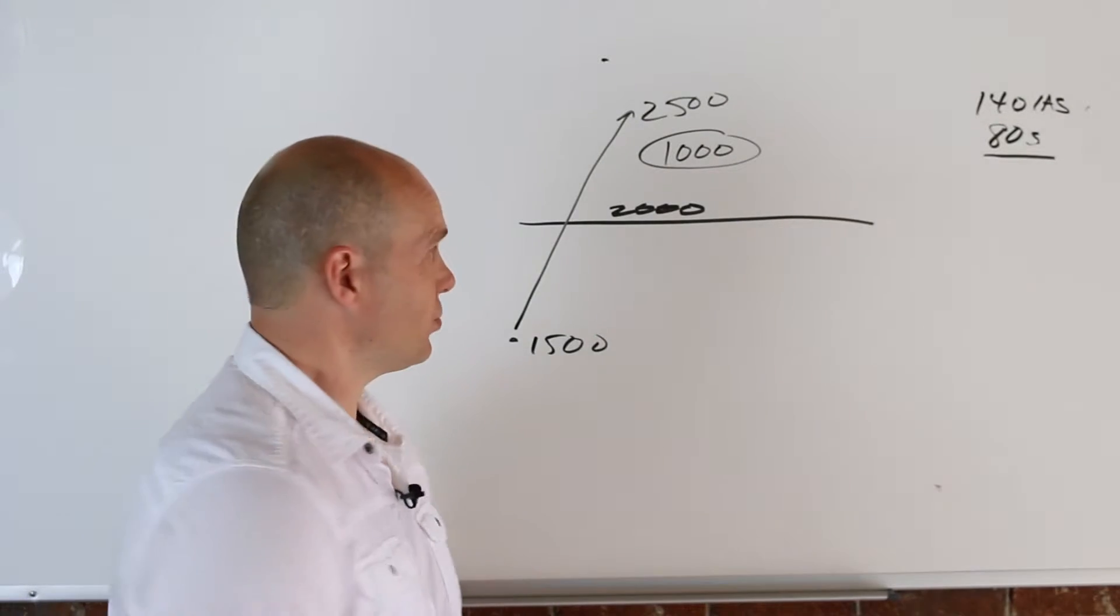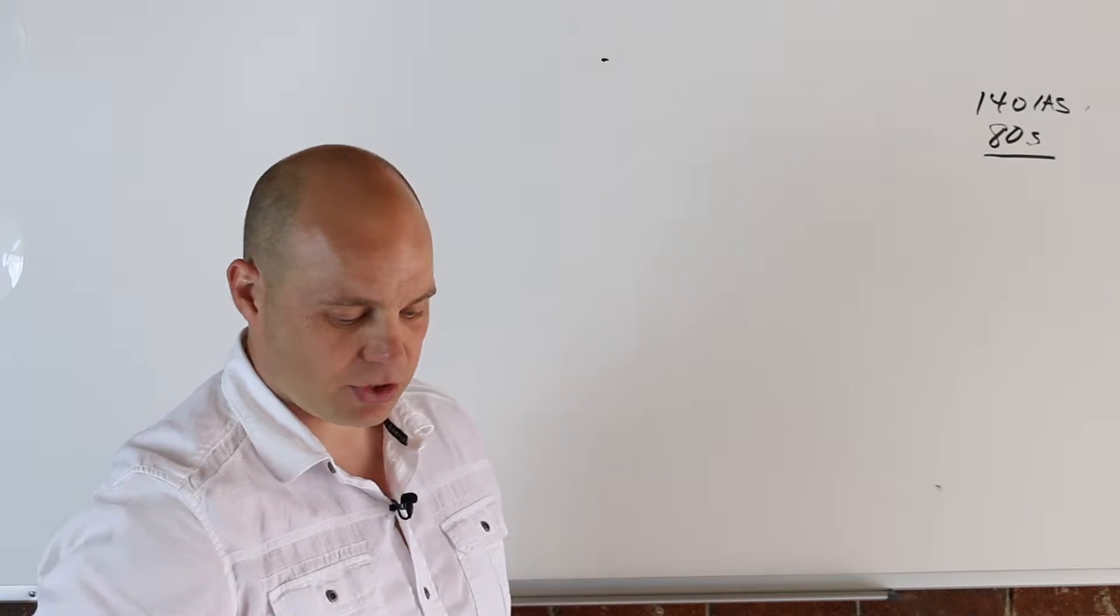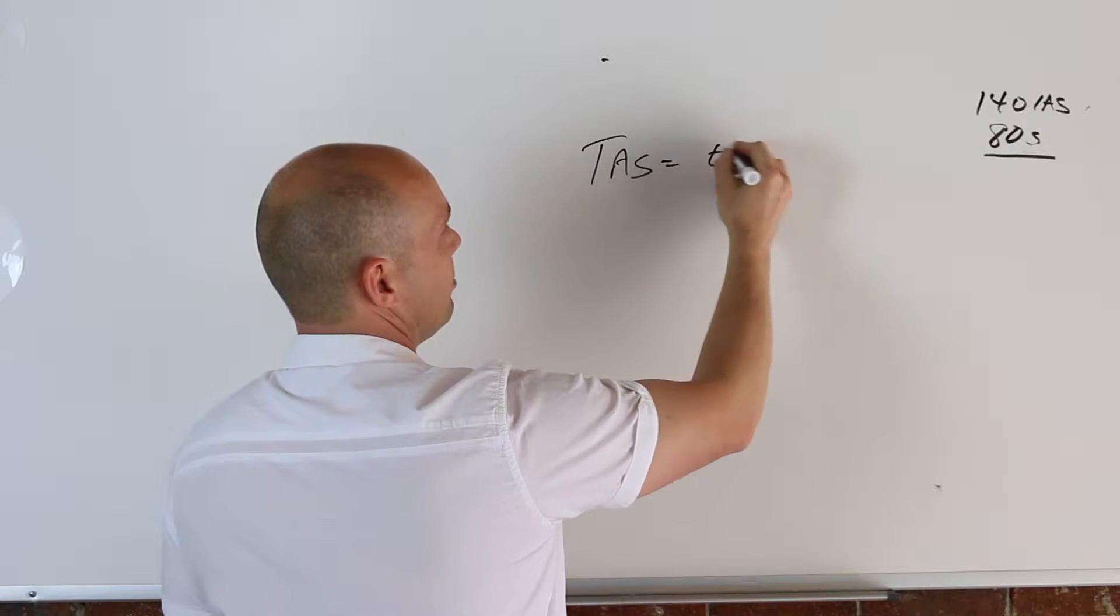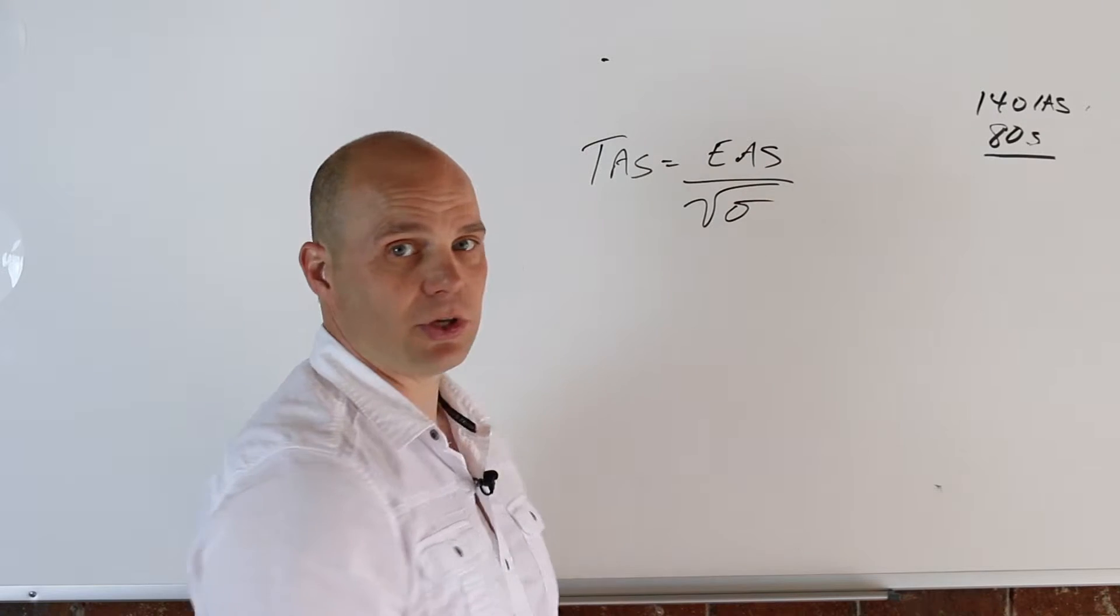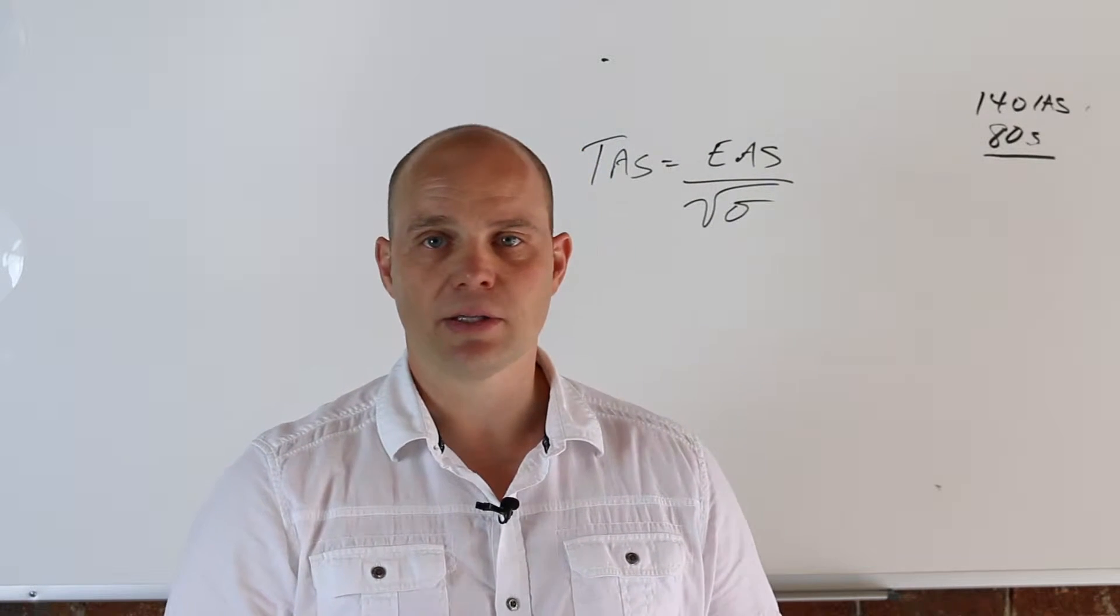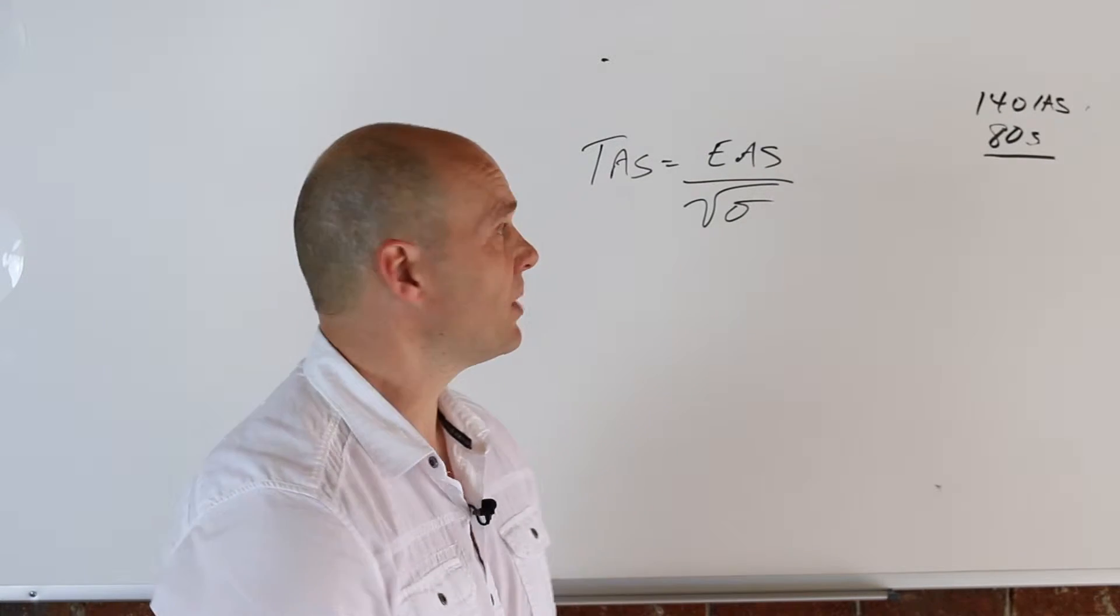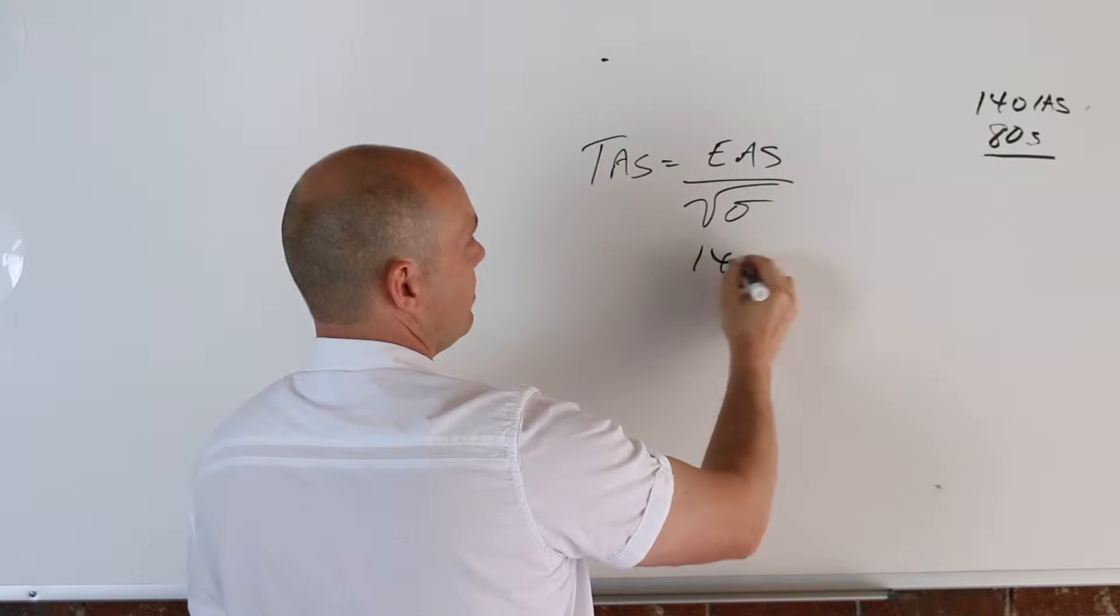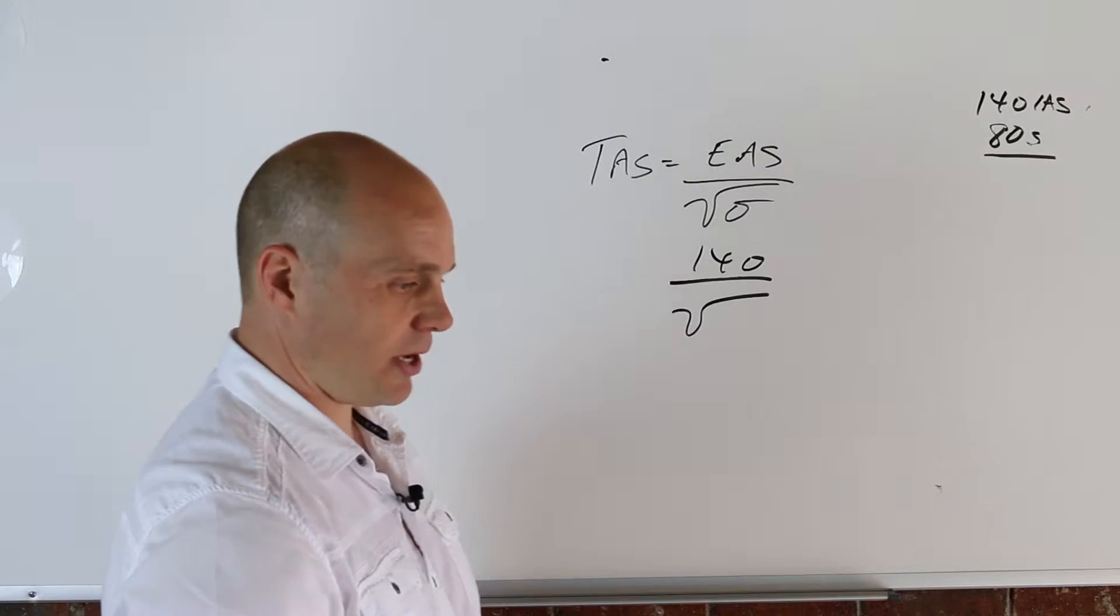So we need to first start off with finding your true airspeed. So this is going back to Chapter 3. To find your true airspeed, true airspeed equals equivalent airspeed divided by the square root of sigma density ratio. Now we're going to assume for this exercise that the indicated airspeed is equal to equivalent airspeed, so there's no reason to go through any kind of conversions on that.